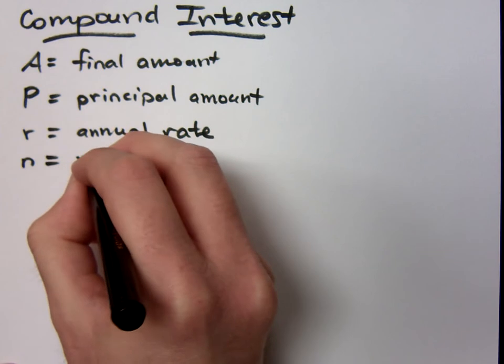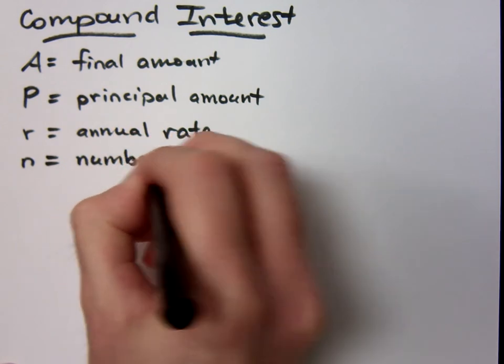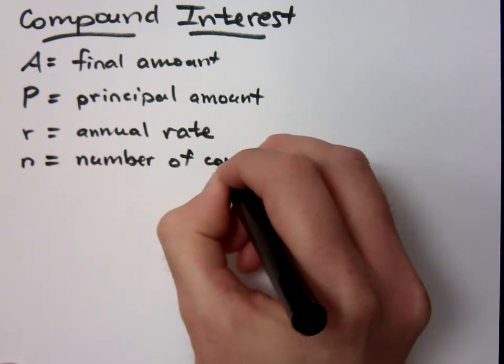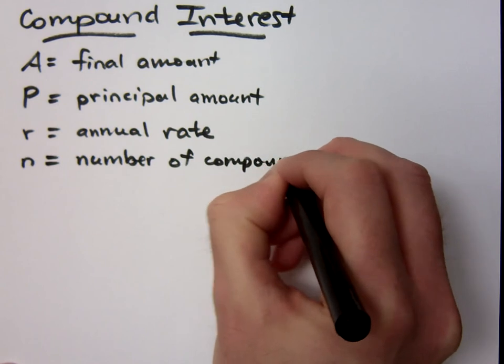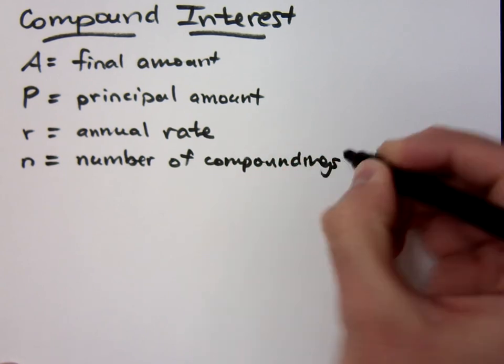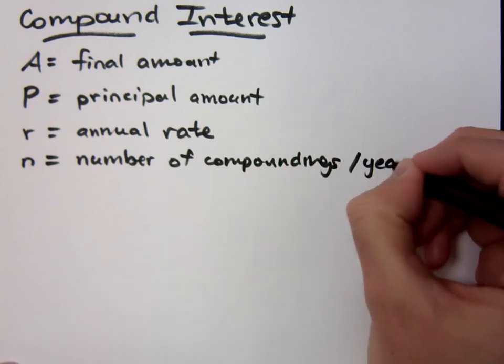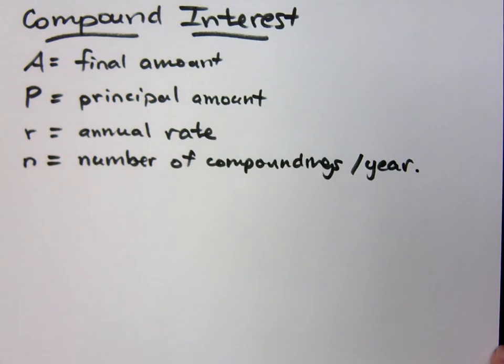N is equal to the number of compoundings per year. That means every time the bank or institution puts interest into your account. Some places it's once a year, some places it's quarterly. If I say something is quarterly, what does that mean? Every three months. Savings does monthly.